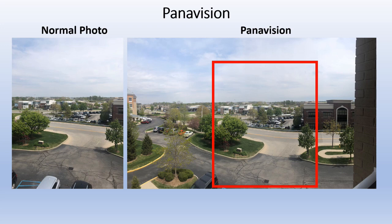Next mode is Panorama. A normal photo shows just the scenery in front of you. However, with a panoramic view, you hold the camera in one position and then scan it horizontally across everything you want to capture, giving you a wide full view of the entire scene — that's Panorama.